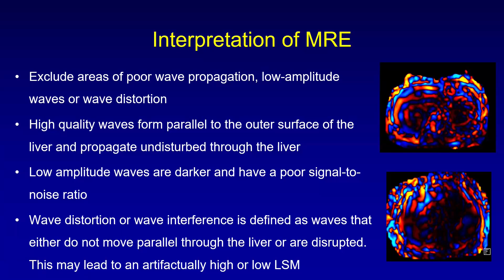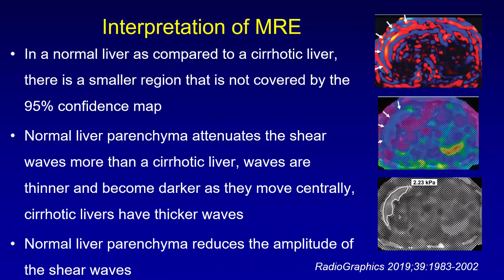Once you have the acquisition, to interpret the MRE you must look at the color wave map first — that's very important. You have to exclude areas of poor wave propagation, low amplitude waves, or wave distortion. A high-quality wave forms parallel to the outer surface of the liver and propagates undisturbed through it. Low amplitude waves are darker and have a poor signal-to-noise ratio. Wave distortion or interference — where waves do not move parallel through the liver or are disrupted — may lead to an artifactually high or low LSM value.